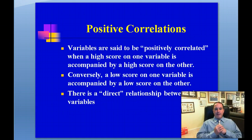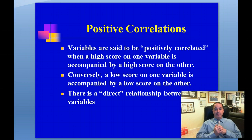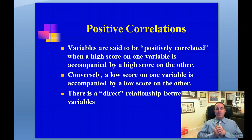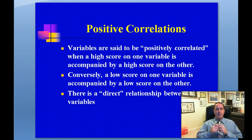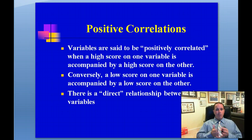The first type is known as a positive correlation. Variables are said to be positively correlated when a high score on one variable is accompanied by a high score on the other, and conversely, a low score on one variable is accompanied by a low score on the other. There is a direct relationship between the variables — as one variable goes up, the other goes up, or as one goes down, the other goes down.